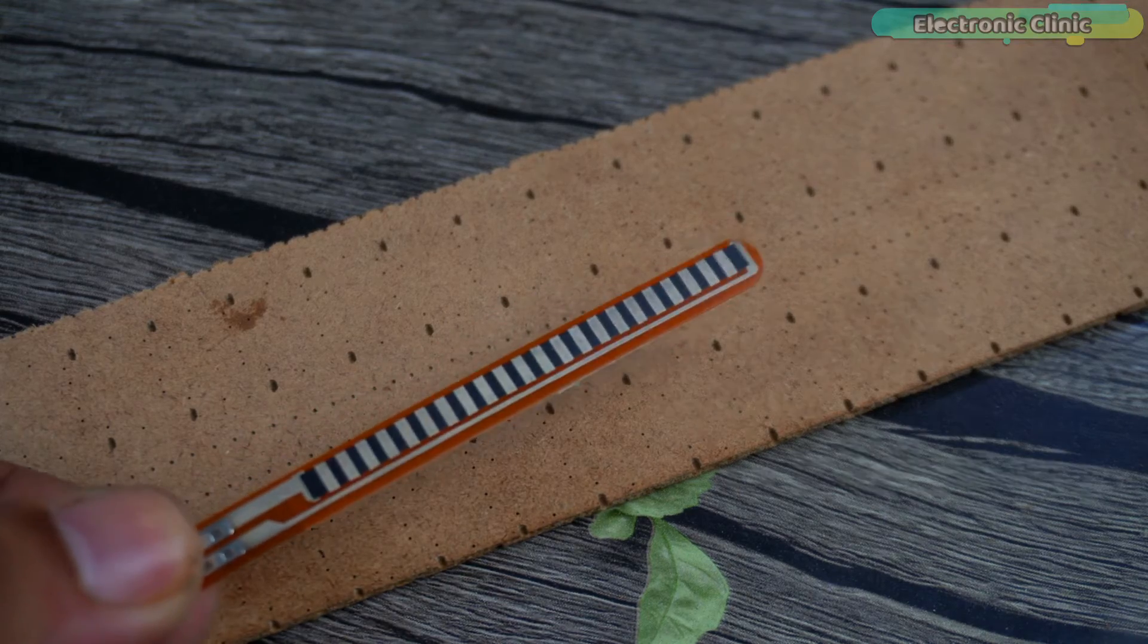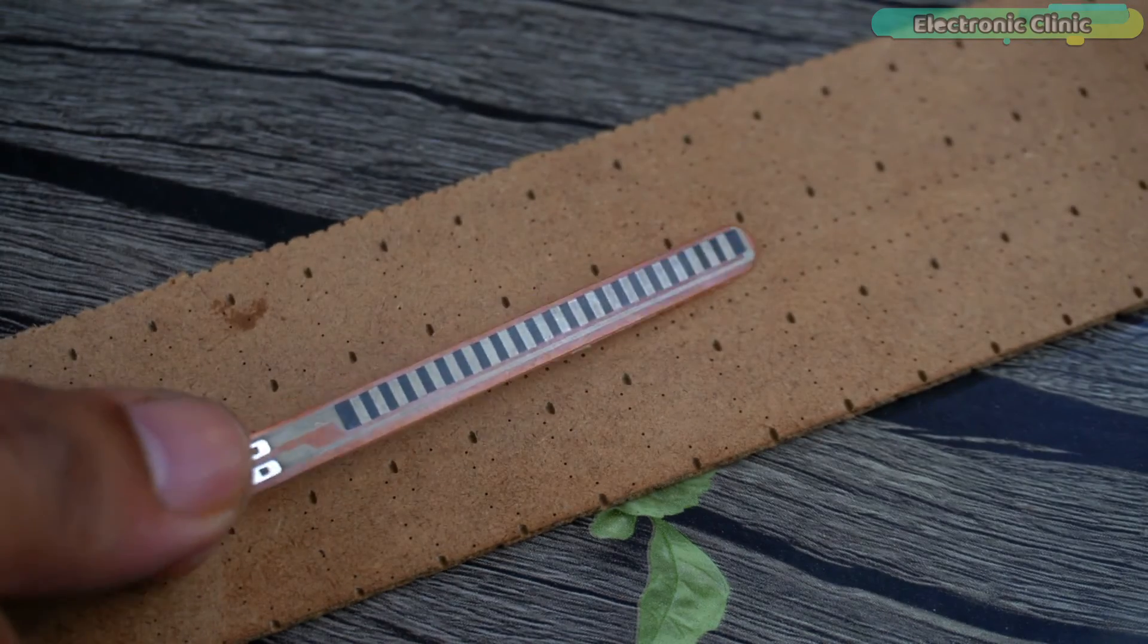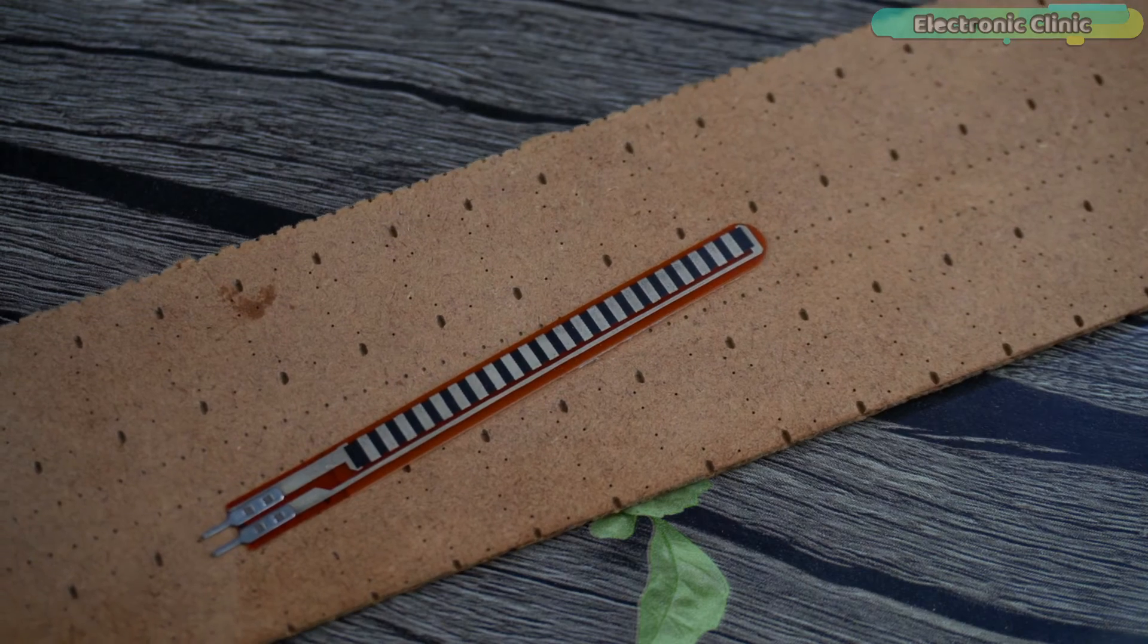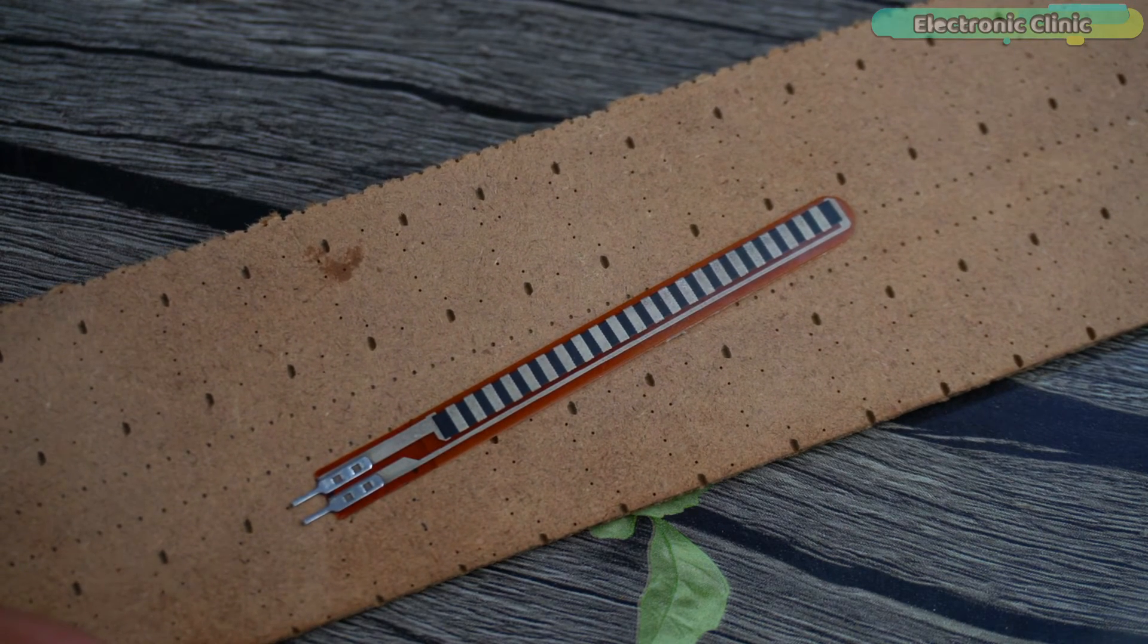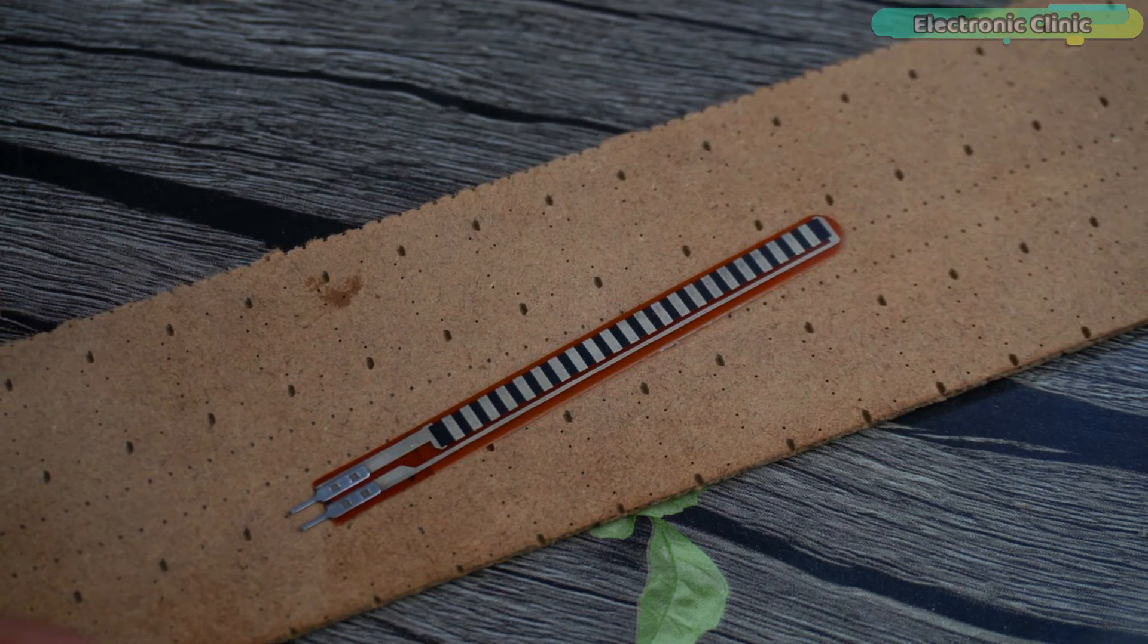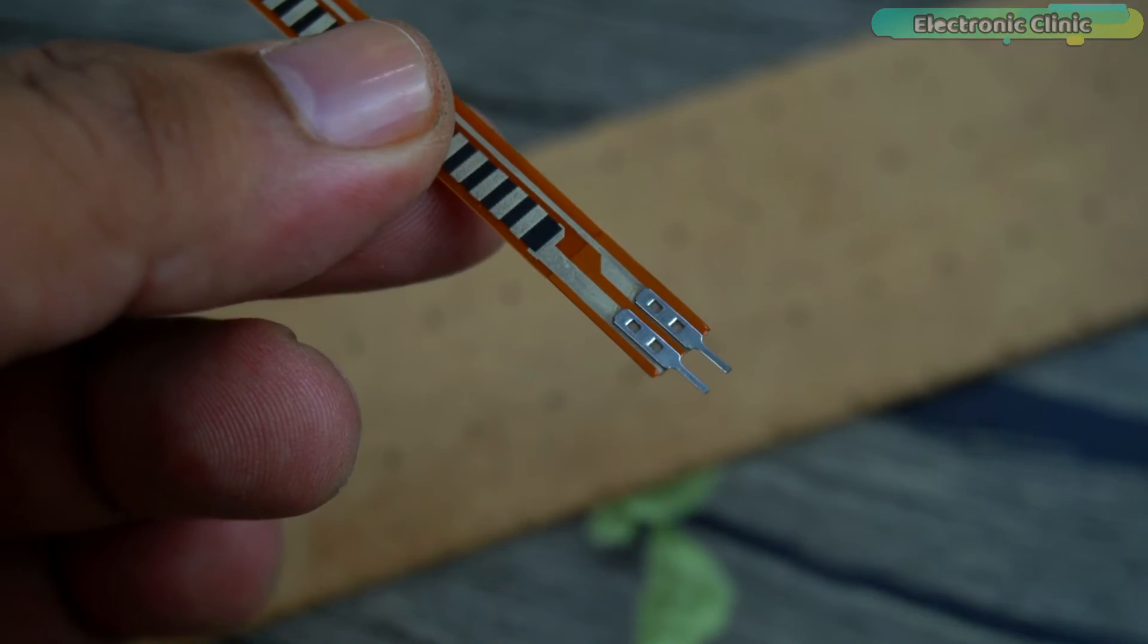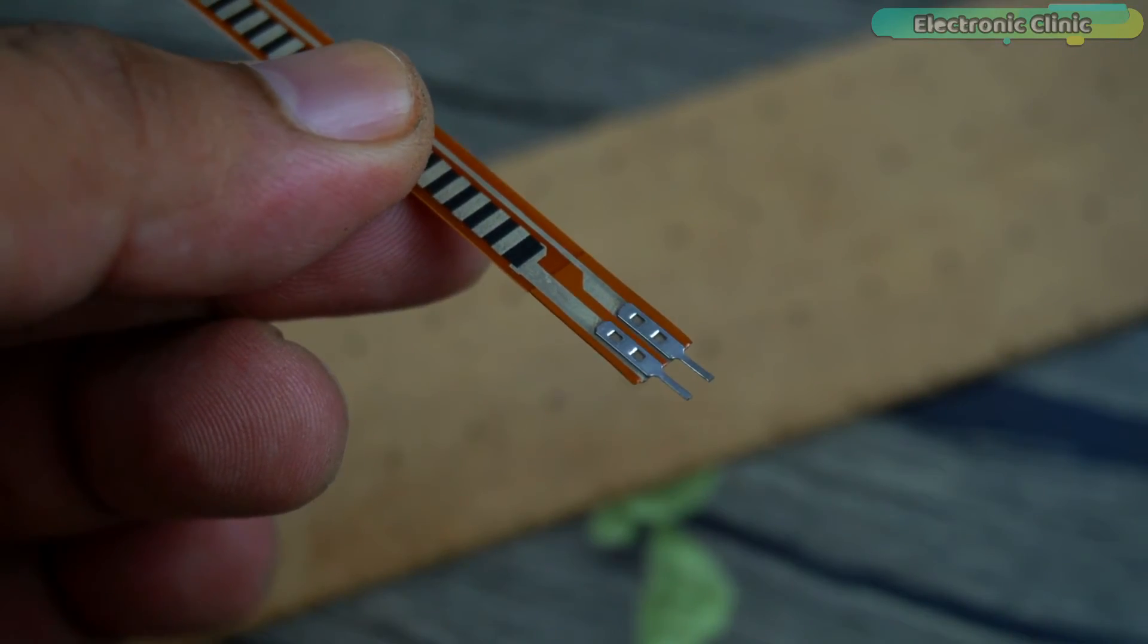In this second example, I'm going to attach the flex sensor to this wooden sheet. If you prefer, you can also attach it to a metal sheet, or on the surface of any flexible object. Anyway, first I'm going to solder two wires, so that I can easily use it.